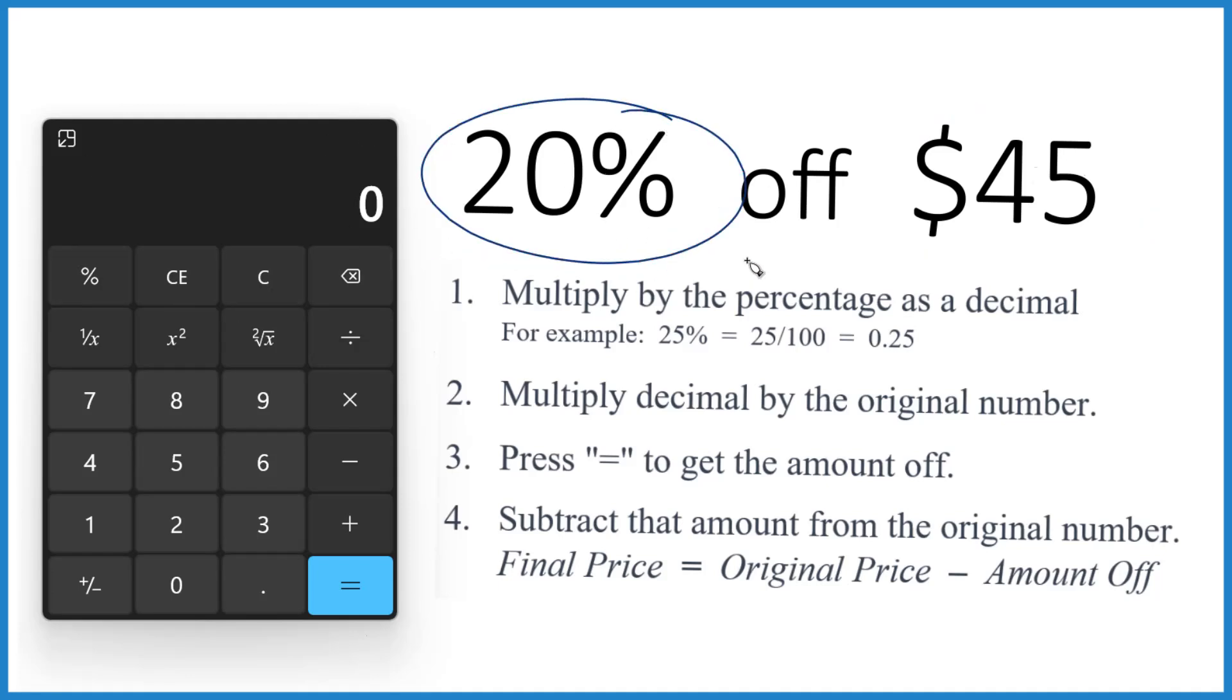You take the percent, 20%, and you divide it by 100. Divide the percent by 100. That'll give us a decimal. So 20 divided by 100, that gives us a decimal, 0.2. That's the first step.